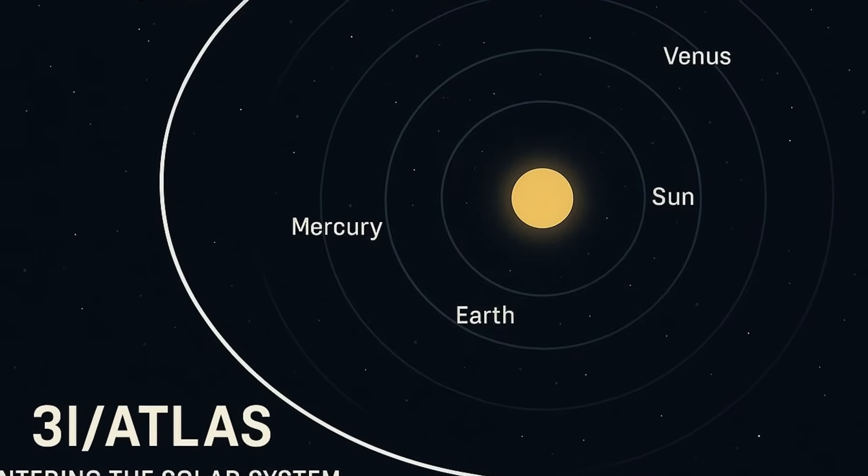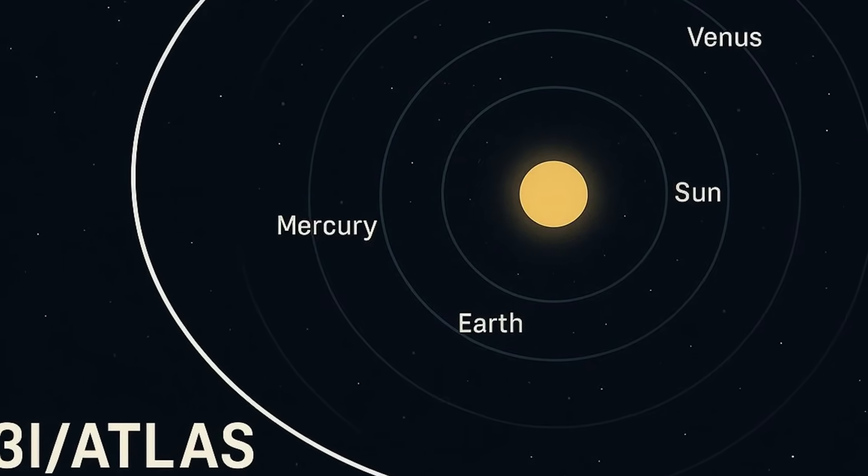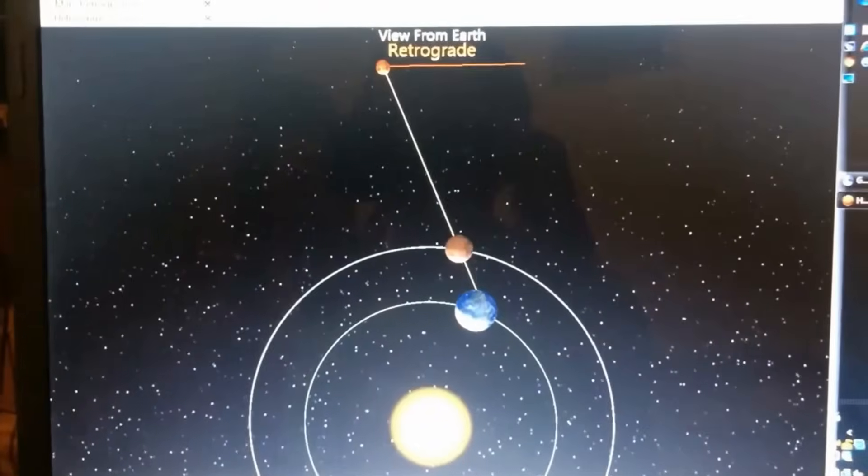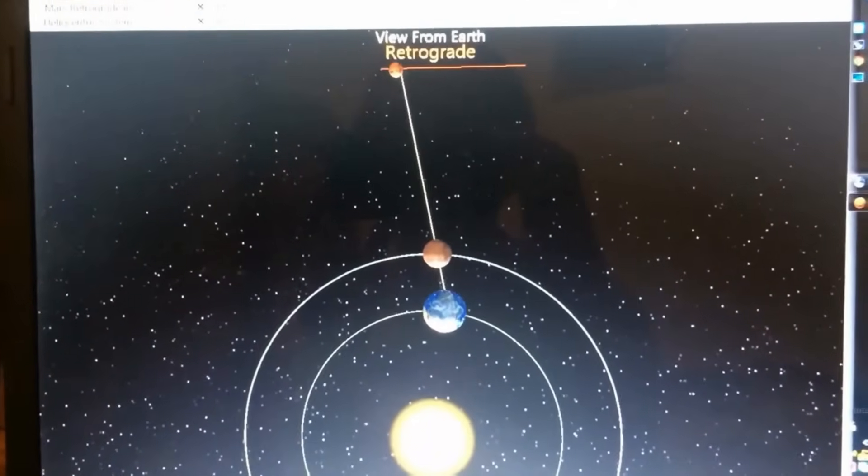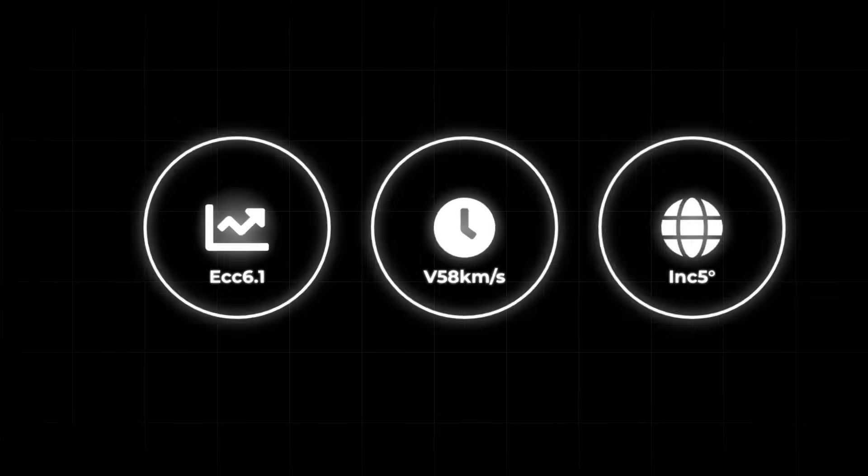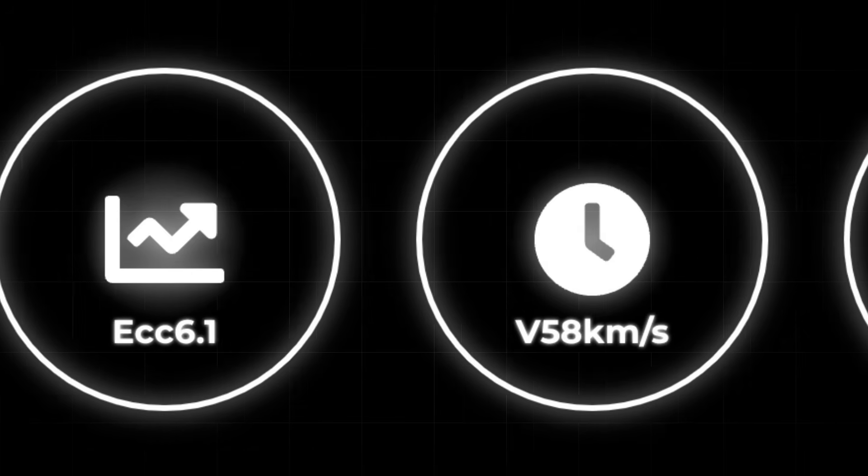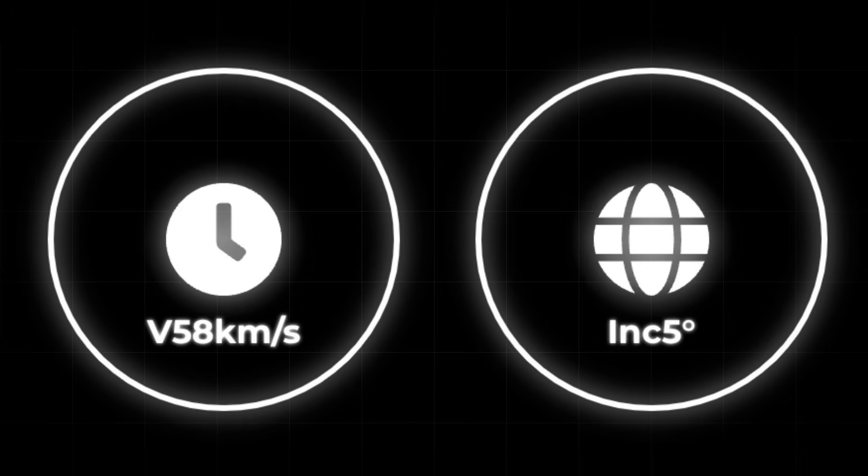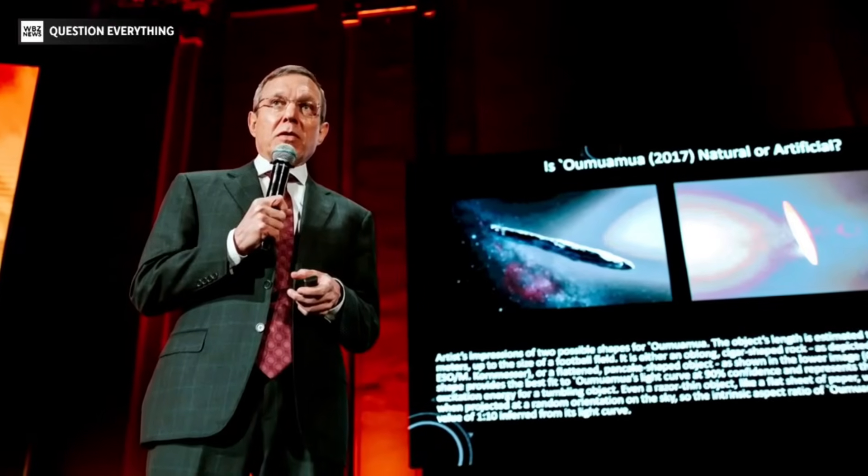Only 3i-Atlas traces a path so nearly parallel to the planetary orbits, albeit in retrograde, moving opposite the planet's direction. These figures—eccentricity 6.1, hyperbolic excess velocity near 58 kilometers per second, and a 5-degree inclination—became the focus of intense debate.